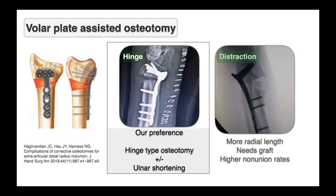There are two types of volar plate-assisted osteotomies. One is a hinge type of osteotomy where you hinge the dorsal cortex open, maintaining good volar contact and fixing with a volar locking plate. The other technique is a distraction type osteotomy where you distract the osteotomy to gain more radial length and inclination. The distraction technique always needs bone grafting and has been reported to be associated with higher non-union rates. Our preference is to do a hinge type of osteotomy, especially in slightly older patients, and combine it with an ulnar shortening osteotomy if correction in ulnar variance is required further.